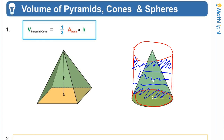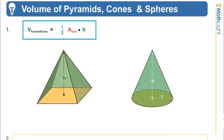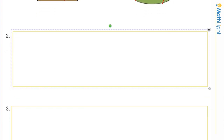What I like my students to remember is: because it comes to a point, it's going to be one third. For the pyramid, the height is perpendicular to the base and hits the vertex of the pyramid. For a cone, the height is also perpendicular and hits the vertex of the cone. So the formula is one third times area of the base times the height.